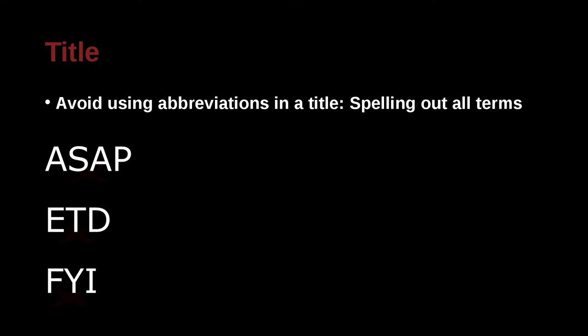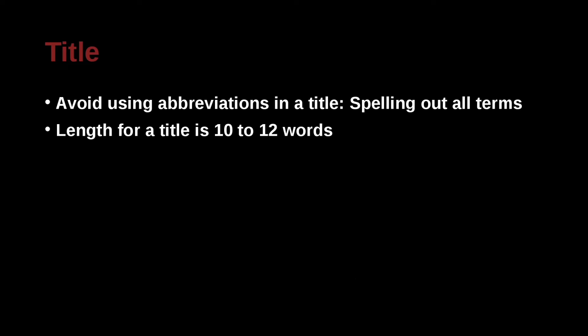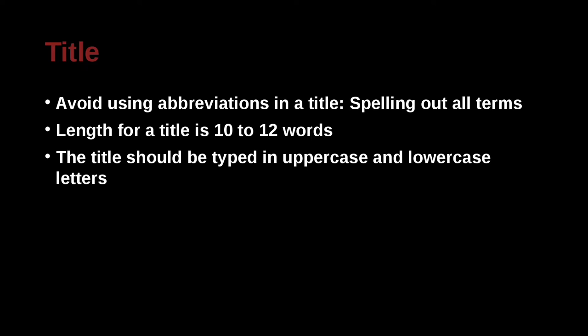Inside your title, don't use abbreviations. You need to spell out everything. The length of a title should be between 10 and 12 words or lower. Shorter is better. But 10 to 12 is really starting to get the maximum. Don't go over. The title should be typed in uppercase when you type it on your word processor at the beginning of each word and lowercase inside. So like the title of a book or the title of a movie.